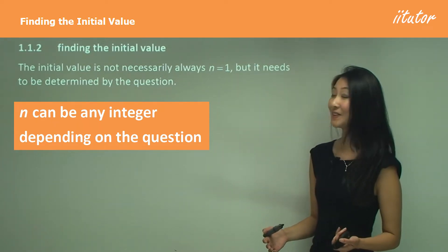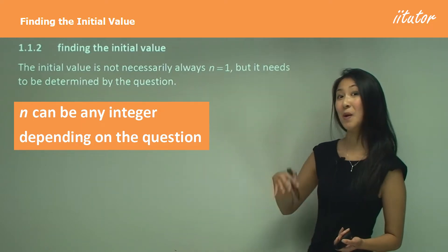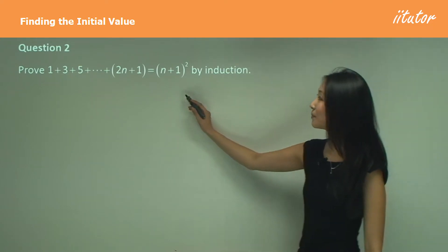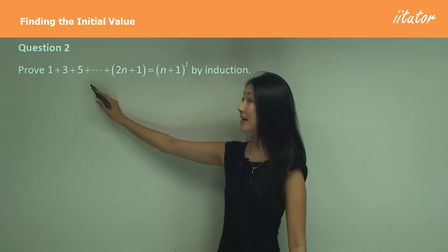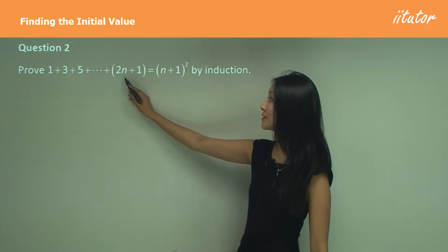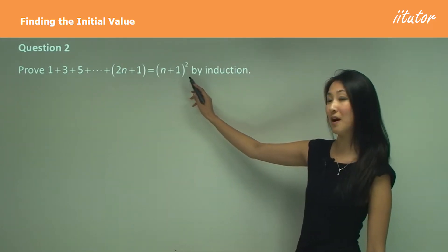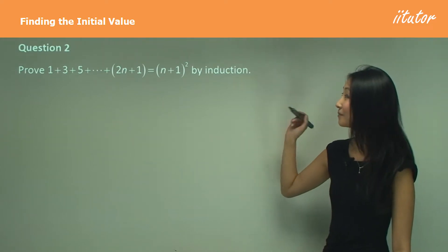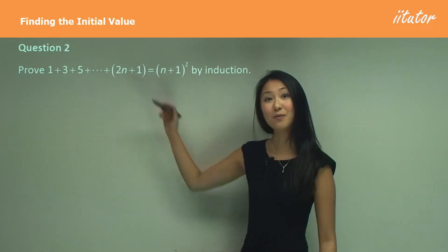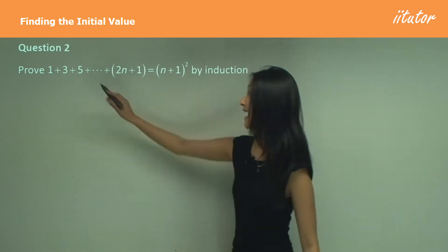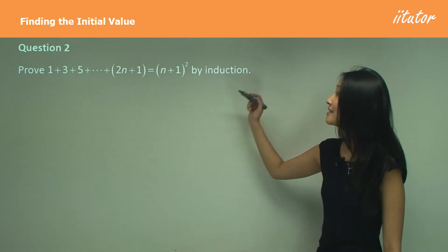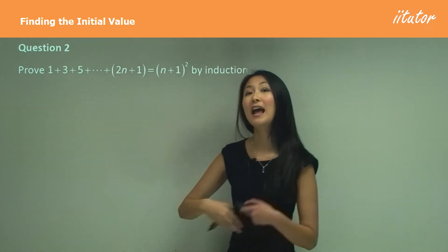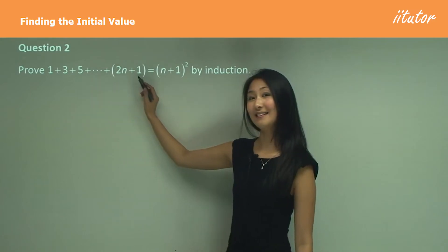So let's look at a question where n does not equal 1 for the first term. In question 2 we want to prove by mathematical induction that 1 plus 3 plus 5, and so on to 2n plus 1, equals n plus 1 squared. Remember, 2n plus 1 is just the general formula for each of the terms in this equation — it represents the first, second, and every single term.